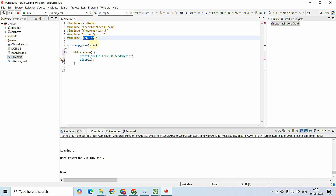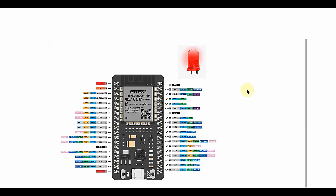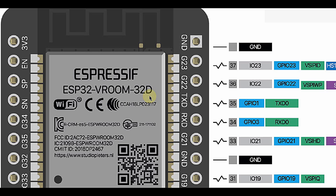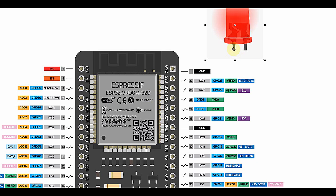Before jumping into the programming part, let's discuss the schematic diagram we are going to build on the breadboard. On the left you can see the ESP32 38-pin development board I am using. If you have a 30-pin board, refer to its pinout. The LED's anode will be connected to GPIO23 of the ESP32, and the cathode will be connected to ground.